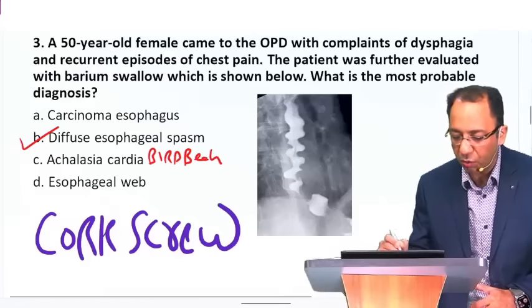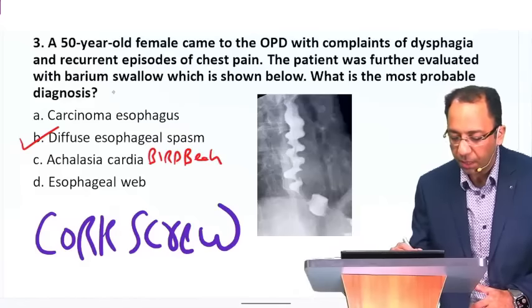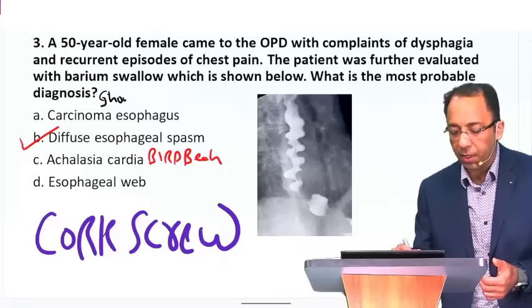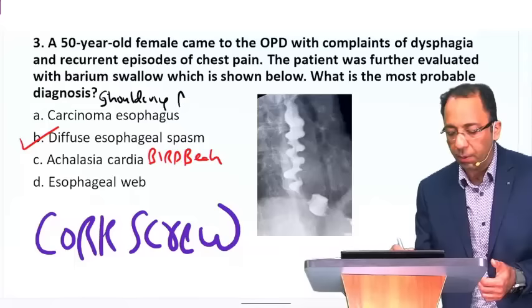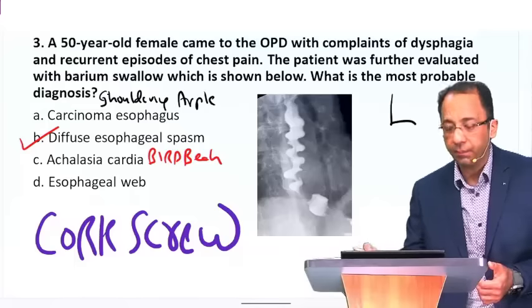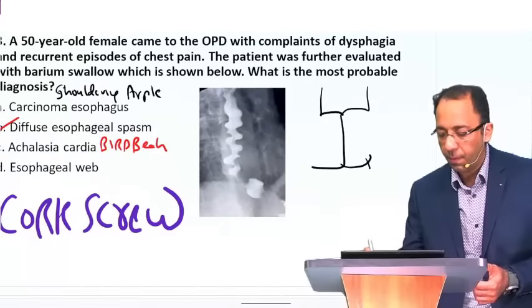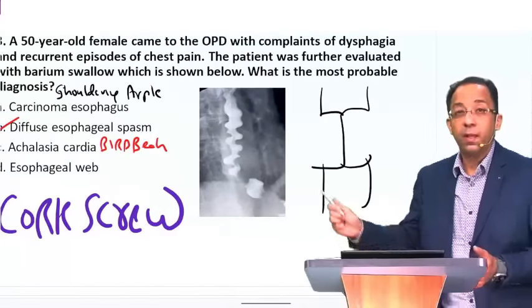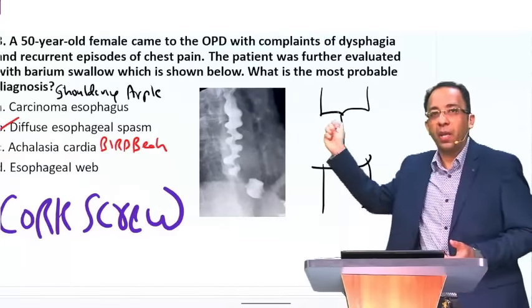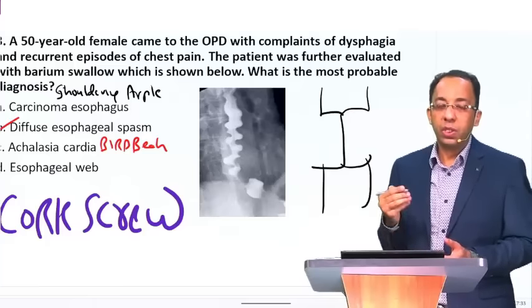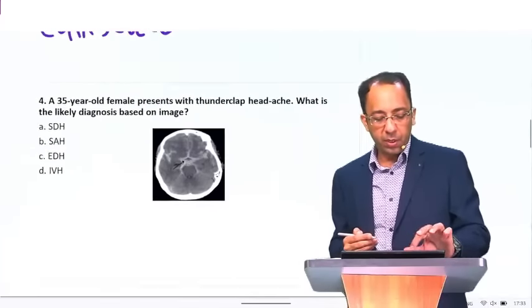What will you see in carcinoma of the esophagus? You will see a rat tail, a shouldered appearance, or apple core-like appearance. Narrowing with overhanging edges — that can be called shouldering or apple core appearance.